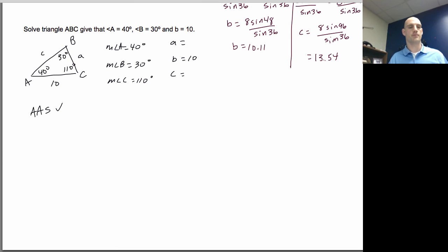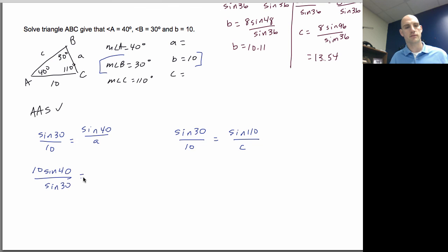Set up my couple of ratios. So I'm going to use my full one. I see that this one's going to be my full one here, right? So I'm going to have sine of 30 over 10 equals sine of 40 over a. Also, sine of 30, again, using my full one, is equal to sine of 110 over c, cross multiply and divide.